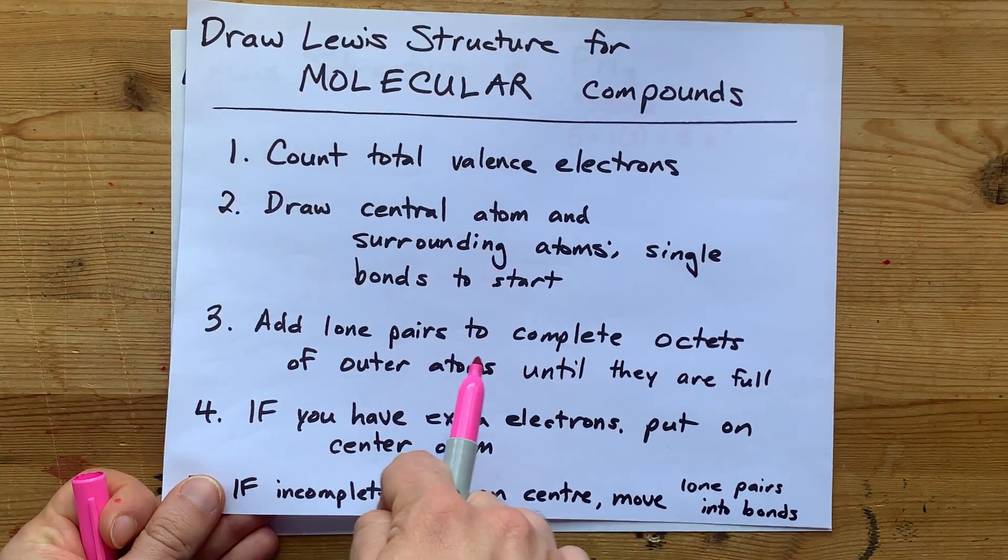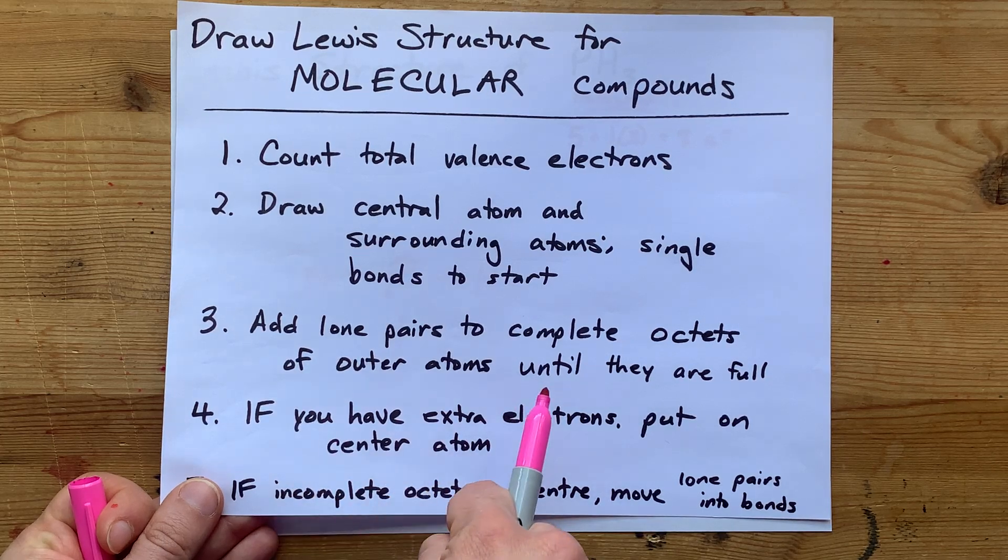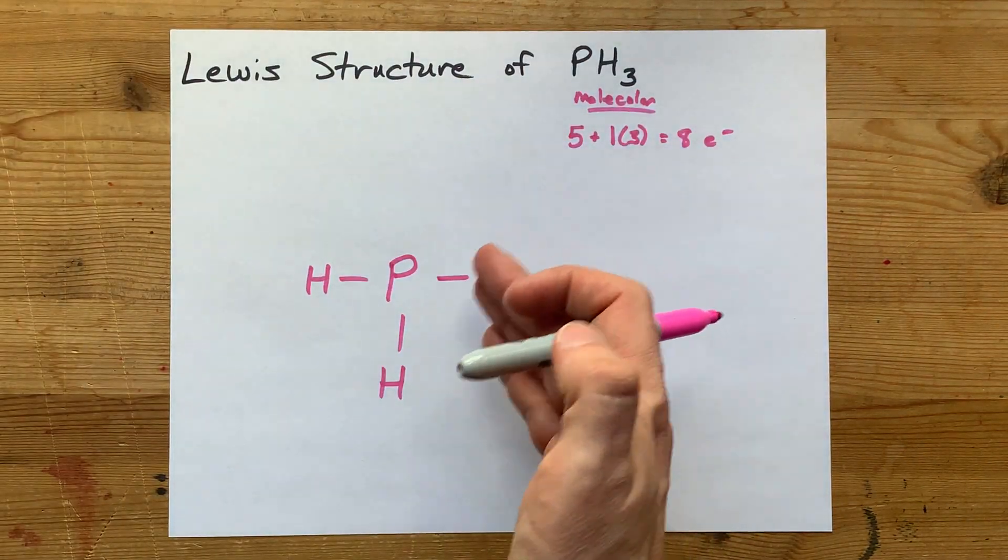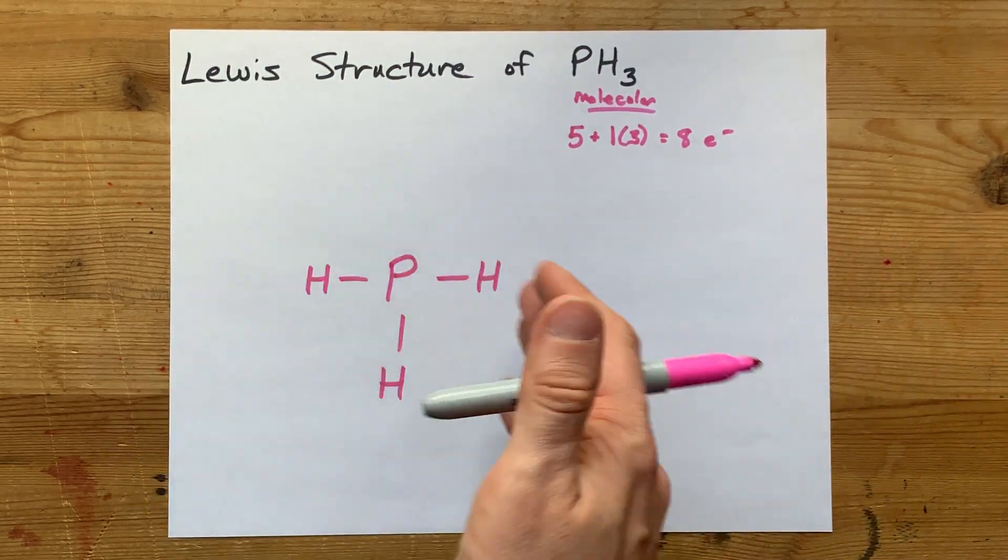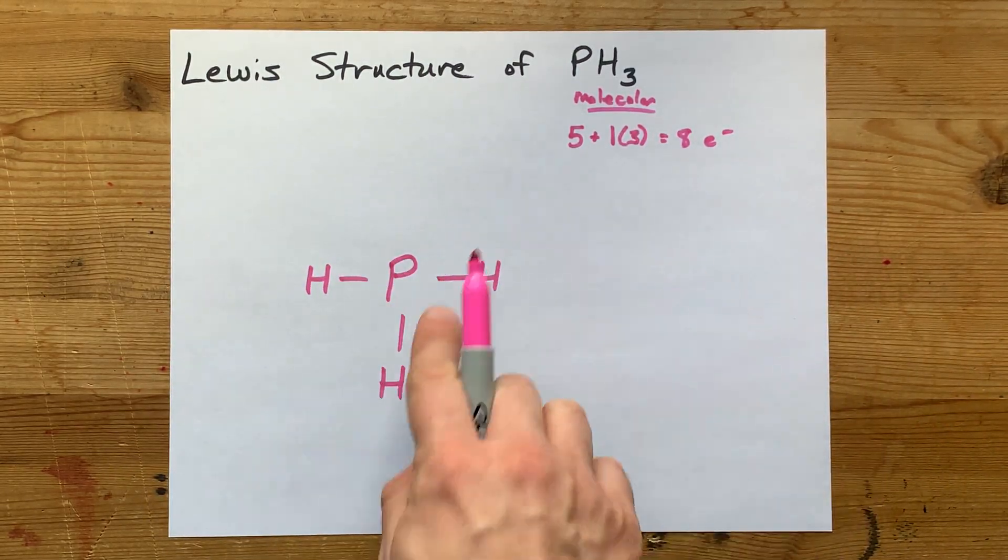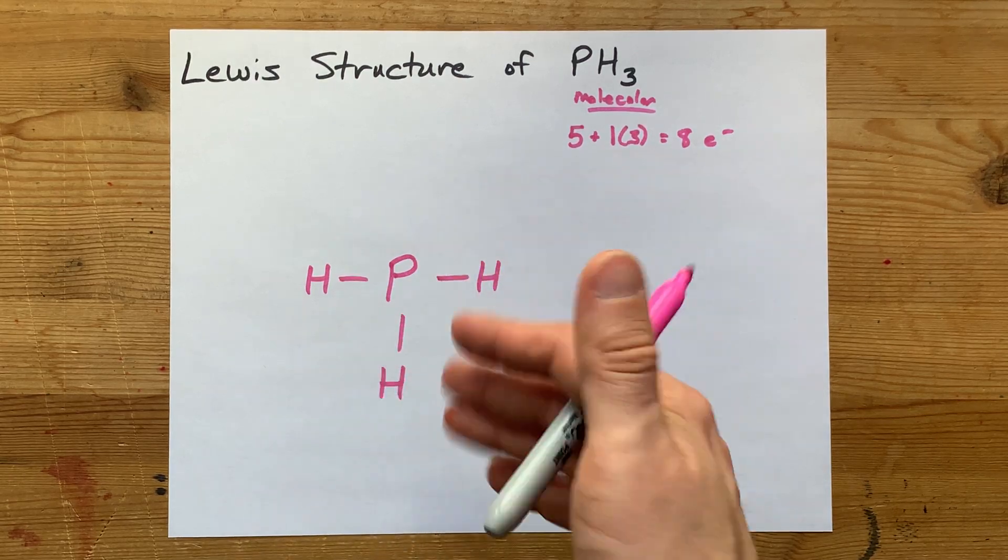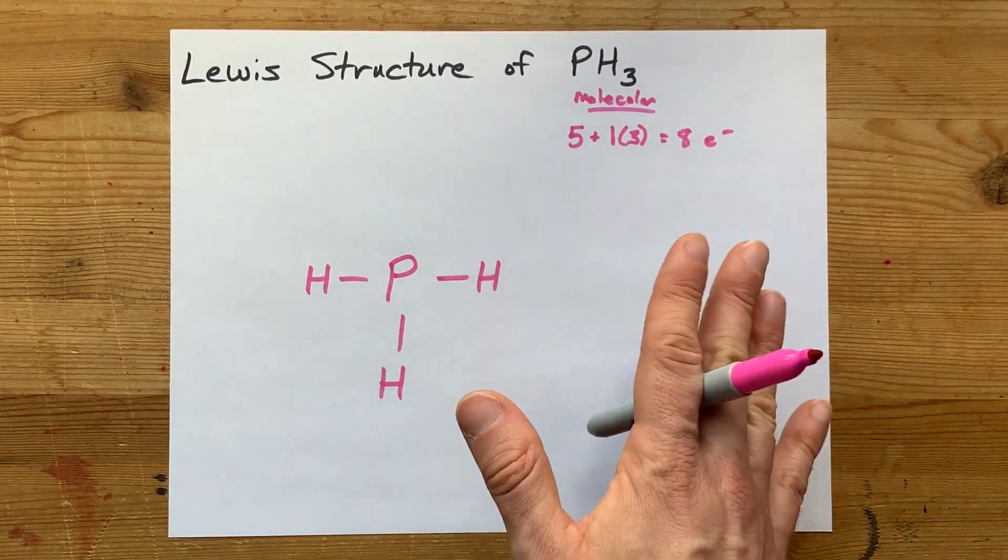We're going to add lone pairs to complete the octets of the outer atoms until they're full. Now, hydrogen is an exception to the octet rule. It's happy with a single bond, and that's it. So these guys, these hydrogens, are happy. They're done. There's no more to add to them.